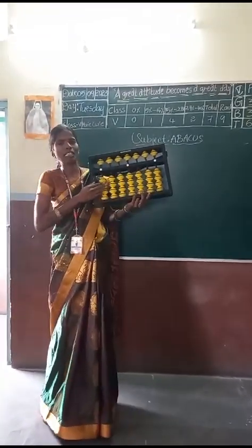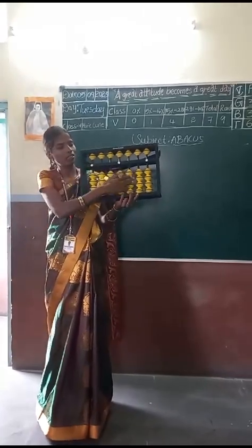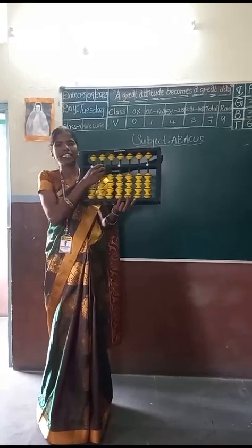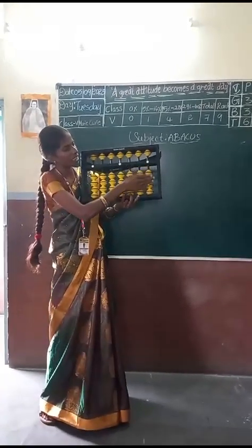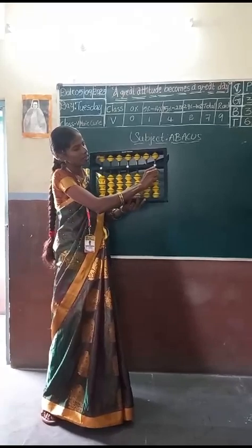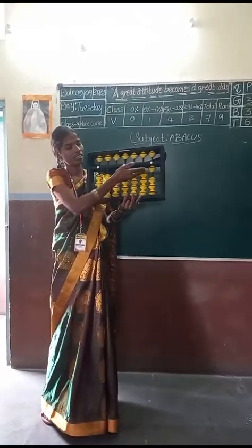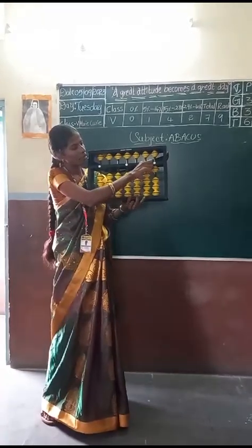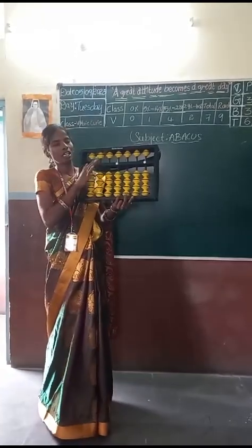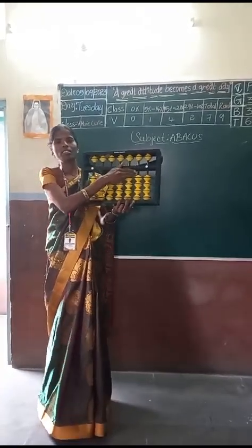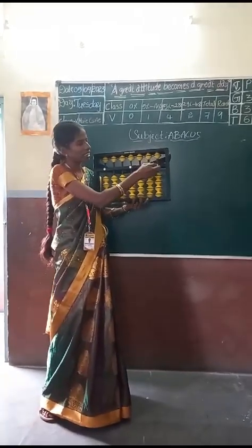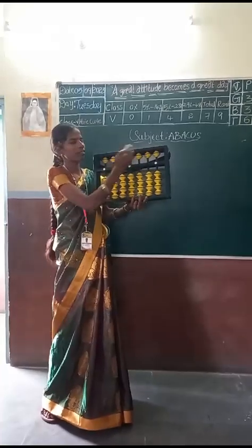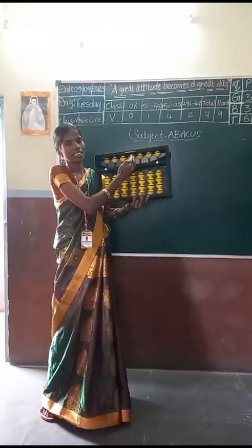Here, we are seeing yellow colored ones. These yellow color balls — we are calling them beads. Each lower side bead value is 1. I am moving one bead up — the value is 1. I am keeping it down — the value is 0. There is one dot indicating here. We are calculating 1s, 10s, 100s like that.